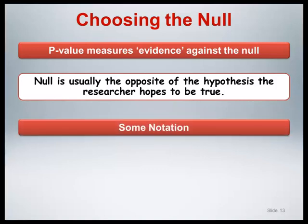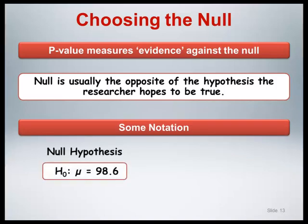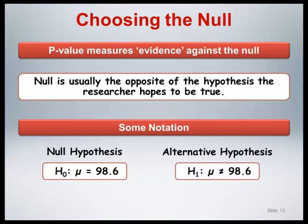Let's introduce some statistical notation for describing the null hypothesis. Traditionally, the null is written as H₀, followed by a colon and then the parameter of interest — here the population mean designated as Greek mu — and its assumed value under the null, here 98.6 degrees Fahrenheit. Although we haven't explicitly mentioned it yet, if there is a null hypothesis, it naturally follows that there would be an alternative hypothesis. For the temperature example, the natural alternative hypothesis is what we refer to as a two-sided alternative hypothesis, meaning we are interested in deviations from the null in either direction — higher or lower.